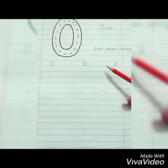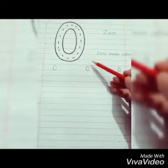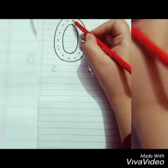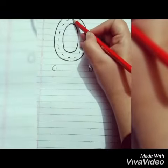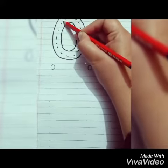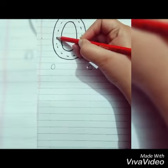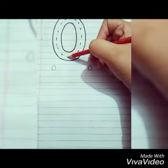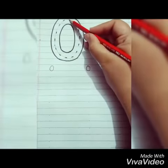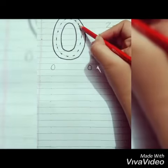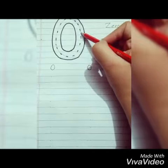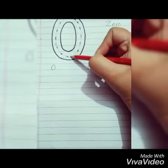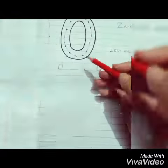Now look how to write zero. First you will trace it — one semicircle, and then another semicircle. Two semicircles make zero.